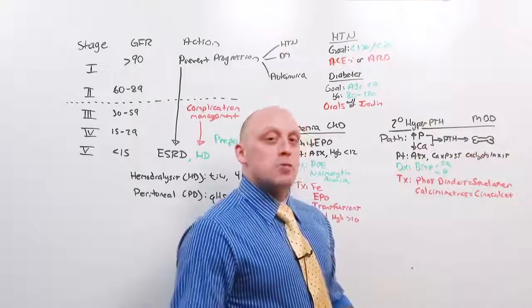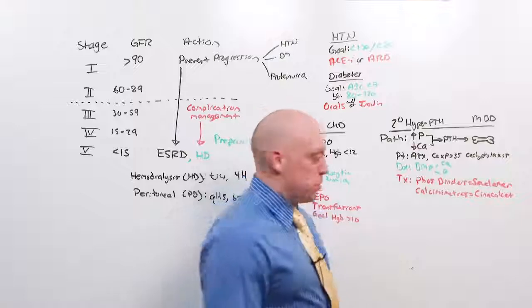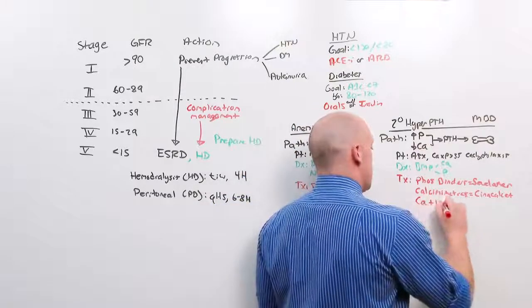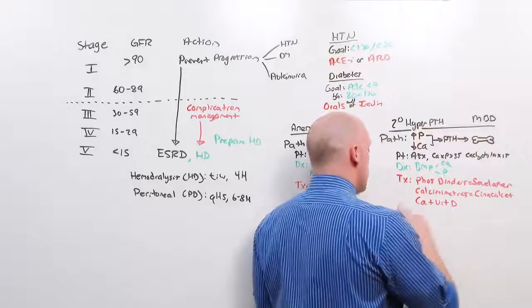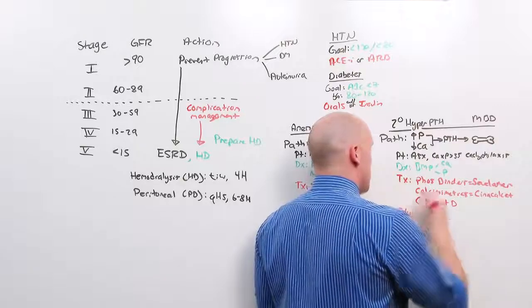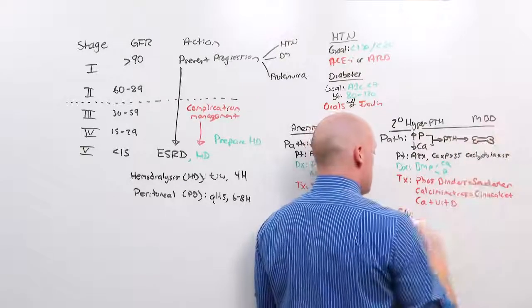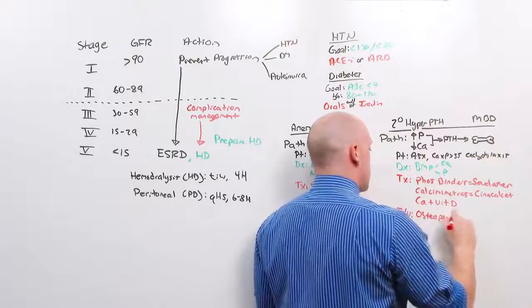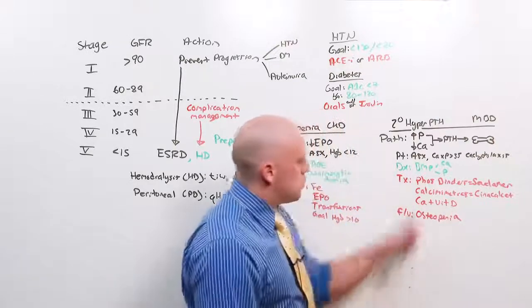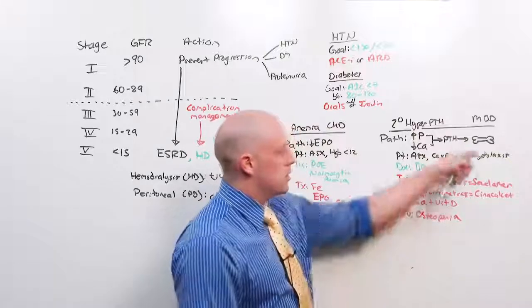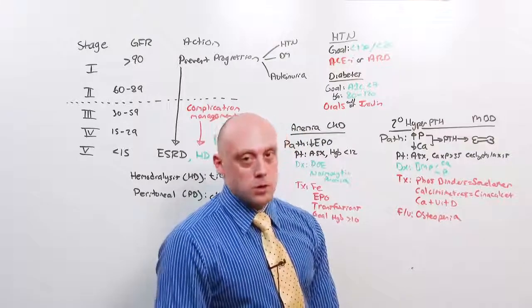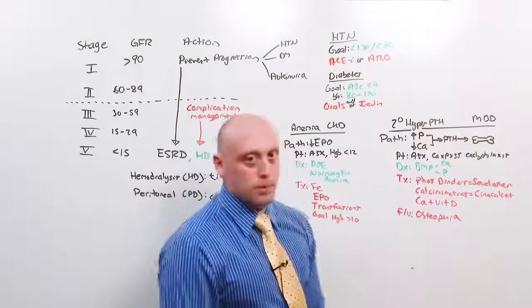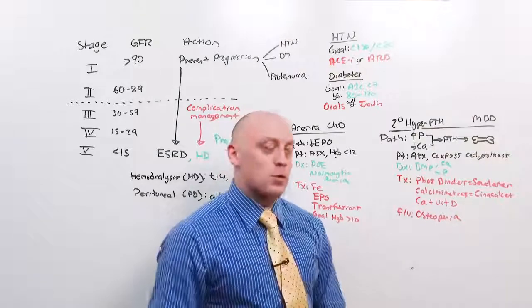The idea is you turn off parathyroid hormone so that you don't get bone resorption. And because they don't make vitamin D the way they're supposed to, you simply replace calcium and vitamin D. If you don't do this, they're going to get mineral bone disease, which is essentially osteopenia, where they get pathological fractures. So you do this to prevent the product of too much parathyroid hormone, which is tertiary hyperparathyroidism and mineral bone disorder.